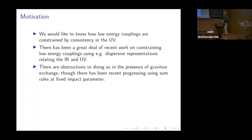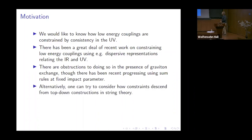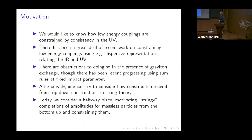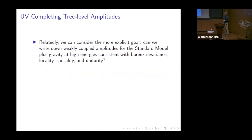We want to take another point of view. Something you can do is look at top-down constructions in string theory if you're happy committing to a stringy construction — but that's extremely challenging for other reasons. Today we want to motivate a halfway place, where we motivate just some stringy classes of amplitudes — amplitudes very closely resembling closed-string amplitudes — but not using the full machinery of string theory to constrain parameters from the top-down. We motivate these amplitudes at tree level, at weak coupling, and constrain them using perturbative unitarity.